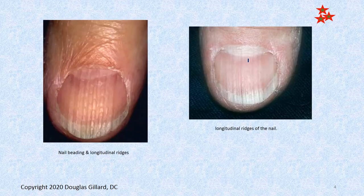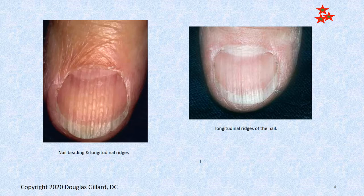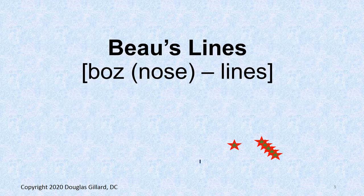That looks exactly like my thumb — those are longitudinal ridges. It means absolutely nothing. And these are the beads — that's beading. You don't need to get into those further; they're just normal. The matrix is kind of sputtering a little bit and producing some onychocytes — not a steady flow of them, more of a spurt, relax, spurt, relax.